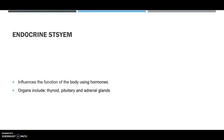The endocrine system influences the function of the body using hormones. The organs include the thyroid, pituitary, and adrenal glands.